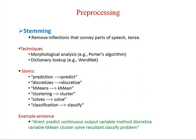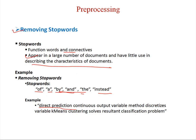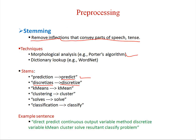The next step of preprocessing is stemming. It removes the inflections that convey parts of speech and tenses. There are two algorithms: morphological analysis — for example, Porter's algorithm — and dictionary-based approaches like WordNet. For example, using Porter's stemmer, 'prediction' is converted to the root word 'predict', and 'discretize' is converted to the root word 'discretize'. The same sentence after applying stemming converts all words to their root form.